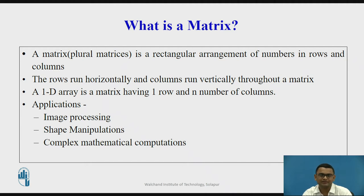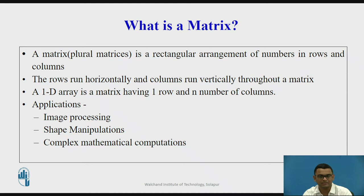The rows in the matrix run horizontally and the columns run vertically throughout the given matrix. A one-dimensional array is a matrix having one row and it may have n number of columns, where n is a positive number.